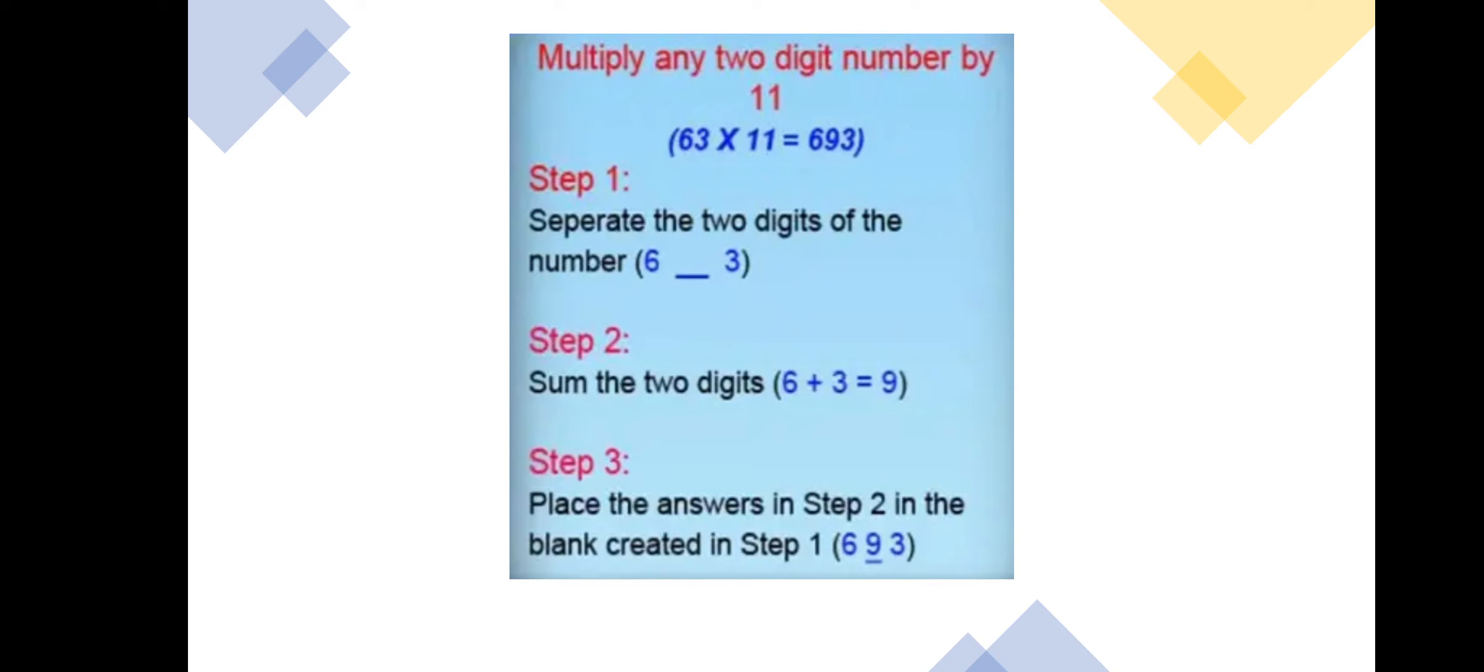In step 2, the sum of the two digits we have found out. Just add these two digits 6 and 3, we get 6 plus 3 is equal to 9.